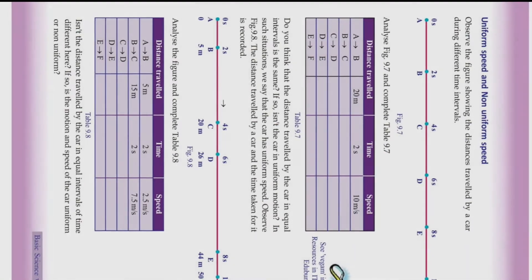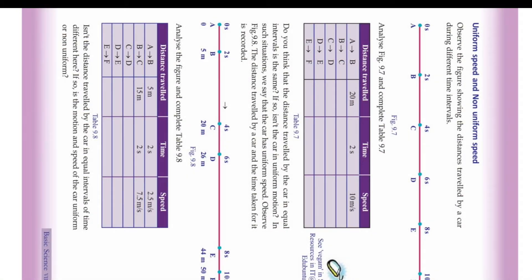We will be talking about uniform speed. Observe on your screen — you can see a car is moving with a speed. You can see the time intervals and the points A, B, C, D, E and F. Let us complete the table. A to B: distance travelled is 20 meters, time is 2 seconds, so speed is 20 divided by 2 = 10 meters per second.